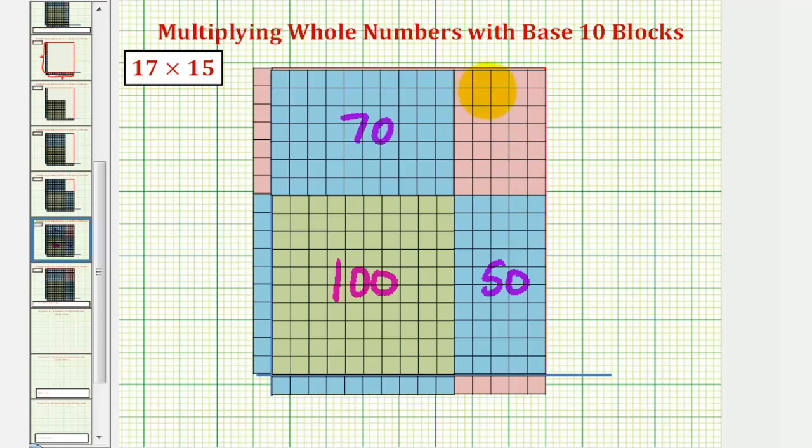And here we have 35 1 blocks, because this is five by seven. So the total area in our product is equal to 100 plus 70 plus 50 plus 35, which is 255, which gives us 17 times 15 equals 255.